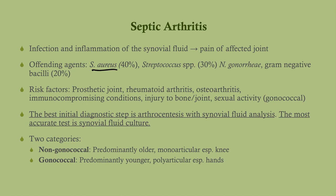There are two categories: non-gonococcal, primarily in older patients, which represents the majority of cases; and gonococcal, which you think of in younger sexually active people, especially those with polyarthritis involving many small joints, possibly migrating, particularly in the hands. They may also develop a rash and have a recent history of gonococcal infection. Usually we think of Neisseria gonorrhea, however Neisseria meningitidis can also cause septic arthritis in rare cases.